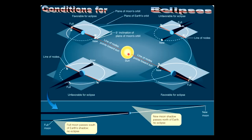When the line of nodes passes through the moon, the earth, and the Sun, that's the condition for the Sun hitting the moon, the moon casting a shadow on the earth, and the earth casting a shadow on the moon. When things aren't lined up, no eclipse occurs. When the line of nodes is passing through the earth and the Sun, we can have eclipses again.